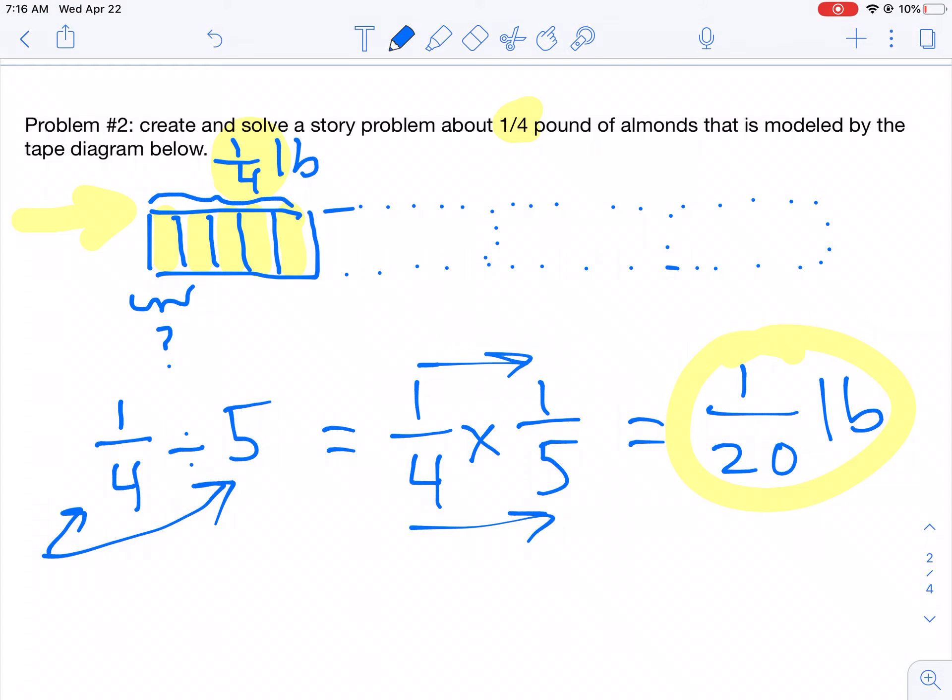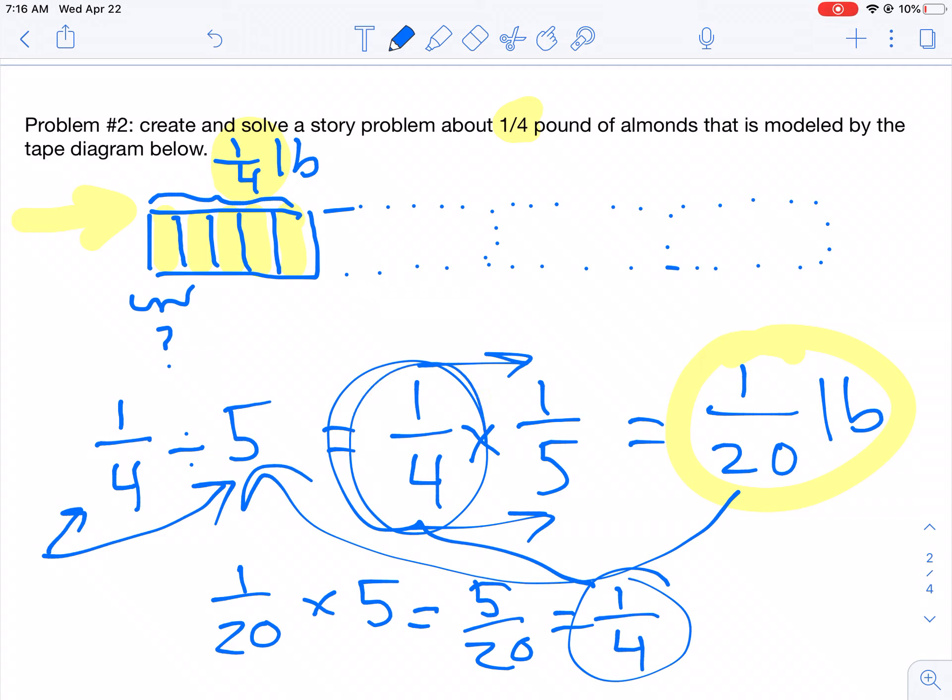So here's our answer: one-twentieth of a pound. And we have to multiply the divisor. So one-twentieth times five is the same thing as five-twentieths, which is the same thing as one-fourth. And your answer here should be the whole that you started with. So we are correct.